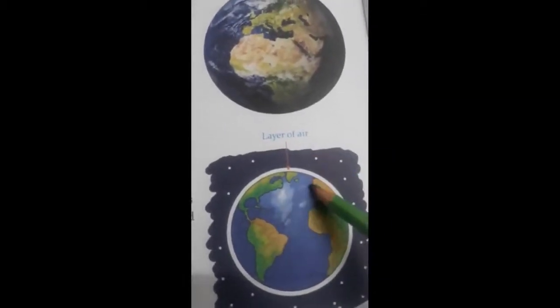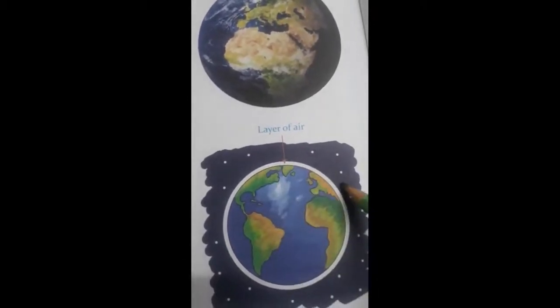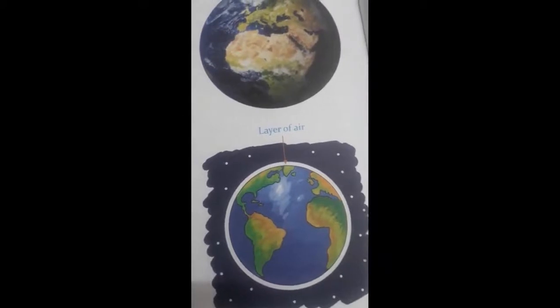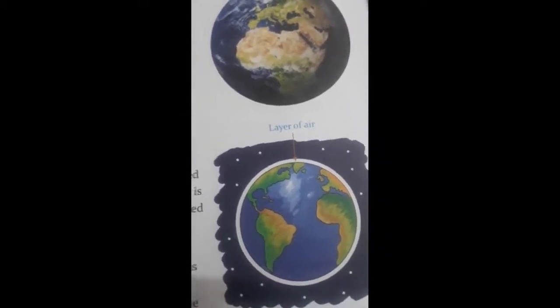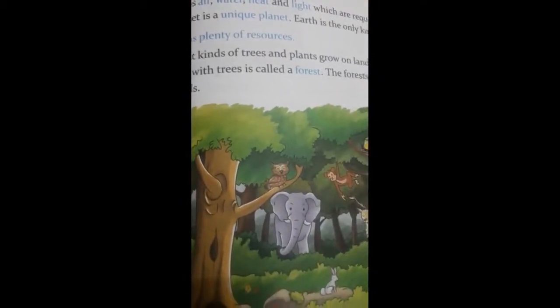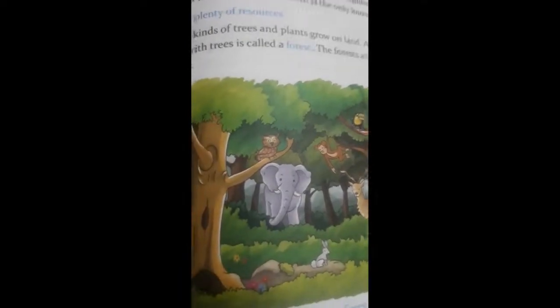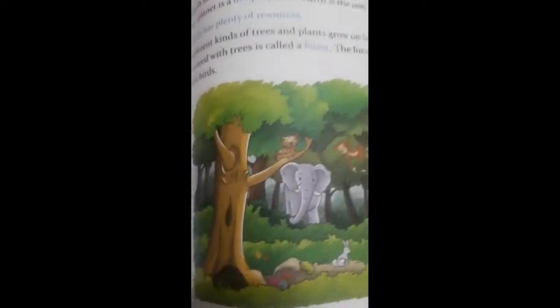Now you can see children, there is a layer of air around the Earth which gives us oxygen to breathe. Earth has air, water and heat light which are required for us, so it is also called a unique planet.